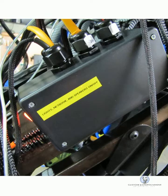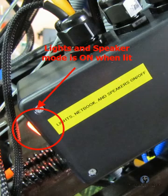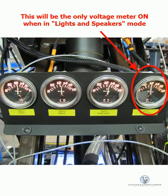It will be obvious when this mode is on because the on switch on the Lights and Speakers Only box on his back towards the right hand side, what would be his scapula area, that box has a red switch on it and it will be lit when it's turned on. Also, you'll notice that the far right voltage meter will be lit and showing voltage readings.